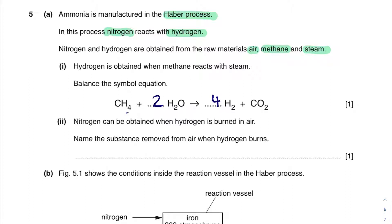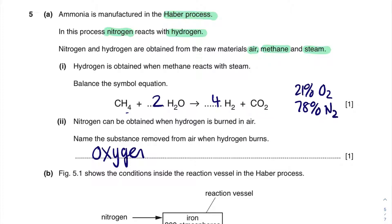Part two: nitrogen can be obtained when hydrogen is burned in air. Name the substance removed from air when hydrogen burns. Air is made of 21% oxygen, 78% nitrogen and 1% other gases, including carbon dioxide and all the noble gases. What we want to do is get rid of the oxygen so that we only have the nitrogen left. If we've only got the nitrogen and the other 1% gases, then we can use that nitrogen in the Haber process. So we burn the air with the water and we end up getting rid of the oxygen and making plain nitrogen.